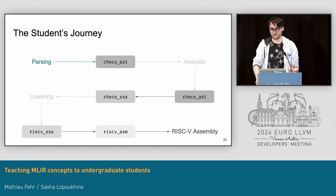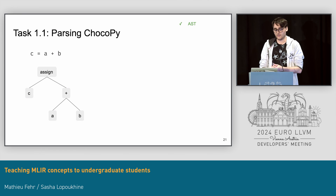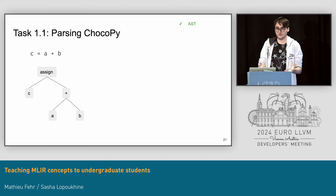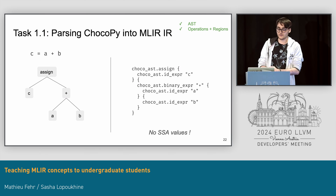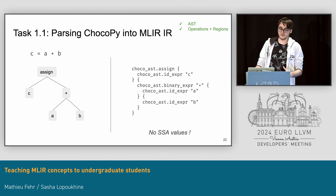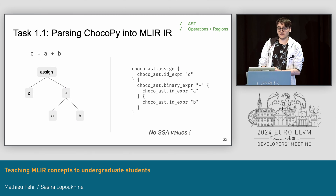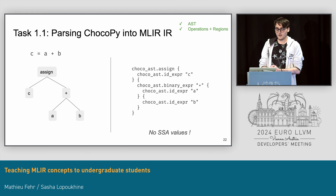Starting with parsing: we take ChocoPy as input and want to produce an AST — something fairly standard in compilers. Students translate this into ChocoAST. The way we encode ASTs in MLIR is by using regions to represent tree structures. For instance, the assign node — a ChocoAST assign operation — has two regions: one for the left-hand side and one for the right-hand side. One good thing here is that we're directly teaching students about MLIR concepts such as operations and regions, before even starting to talk about SSA, gradually introducing MLIR concepts from the get-go.